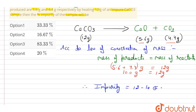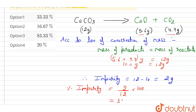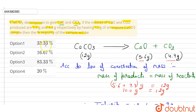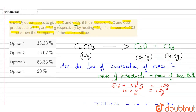12 minus 10 equals 2 grams, so 2 grams is the impurity in the sample. Therefore, we can calculate the percent impurity as the mass of impurity — that is 2 grams — upon the total mass of the reactant, that is 12 grams, into 100. That comes out to be 16.67 percent. So the percentage impurity is 16.67 percent. Marking the options: option one is wrong, option two — 16.67 percent — matches our answer. Therefore, the correct option is option two, 16.67 percent. Thank you.